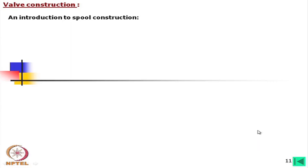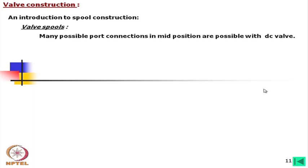Now, an introduction to spool construction. Although we consider valve construction broadly, this lecture covers how the spool is manufactured and how accuracy is maintained — mostly related to the servo valve spool. Many possible port connection configurations in mid positions are possible with DC valves, and while designing such spools, both functional and material aspects must be considered.